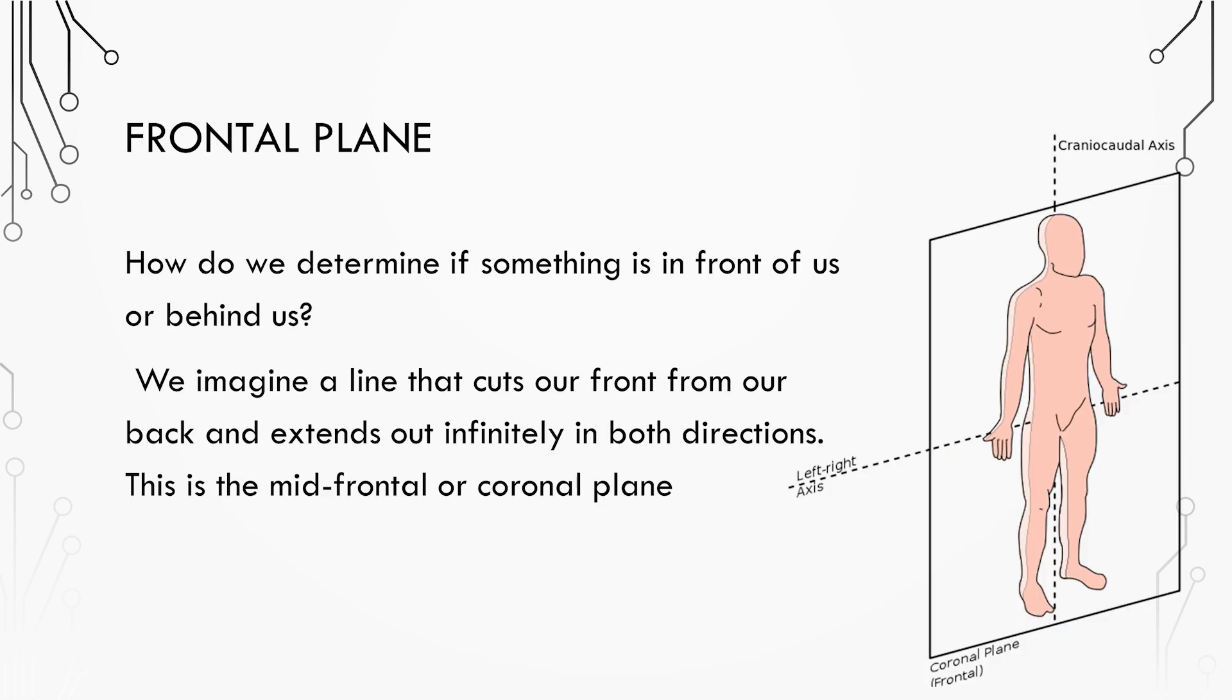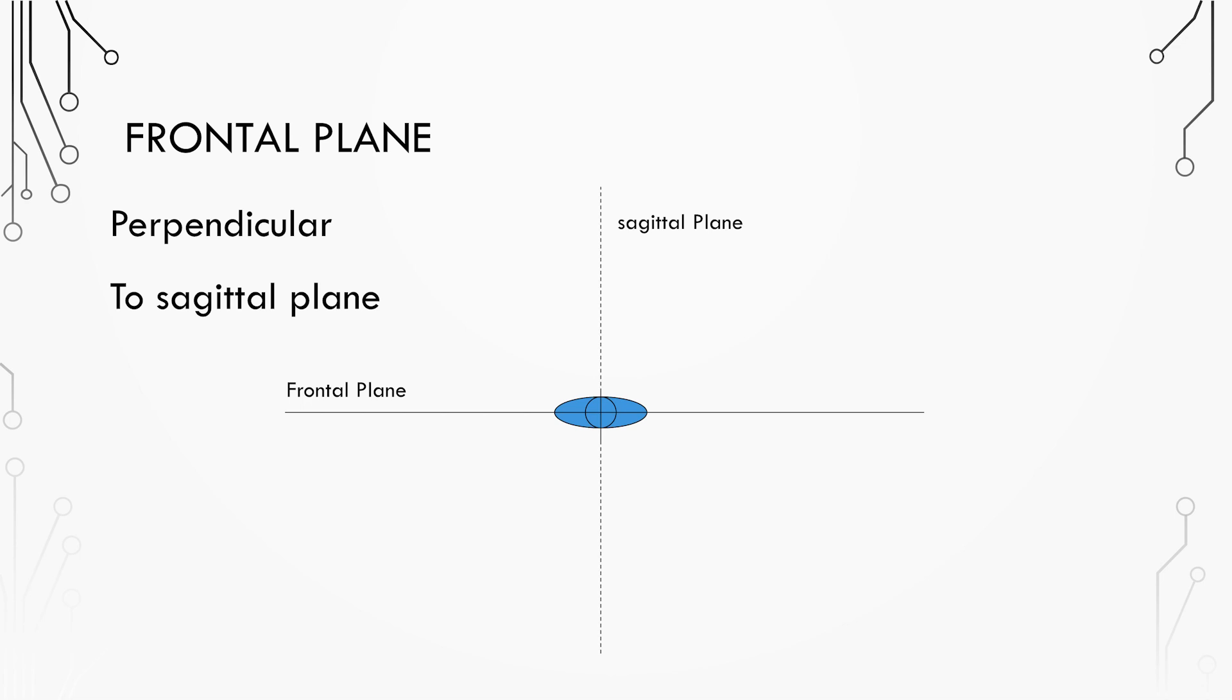The frontal or coronal plane is created by bisecting the sagittal plane at a right angle. This means it's perpendicular to the sagittal plane. Imagine a line running through the middle of your body, extending out infinitely in both directions, separating the front from the back of your body.